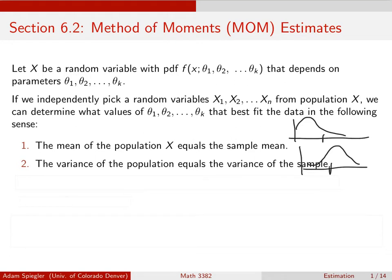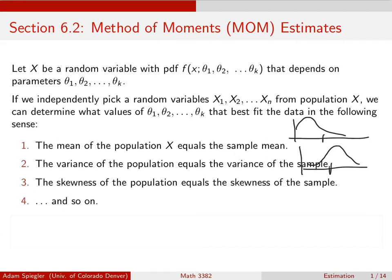This distribution over here, the top one for example, is skewed to the right—it has a tail to the right—and this one has a tail to the left. So we can continue on and say, well I would like to pick values of these parameters so that the skewness of my population matches the skewness of the sample. And there are other properties that we can continue on.